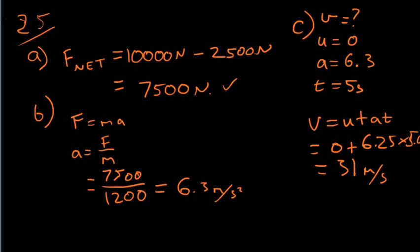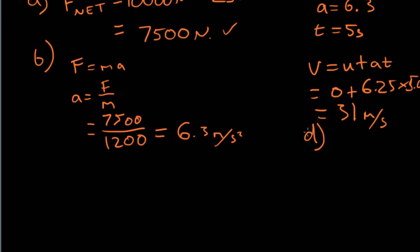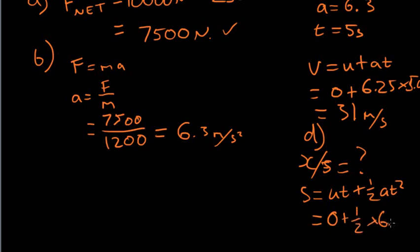Finally, for D, we're looking for displacement, which is x or s. The formula we're going to use is s equals ut plus half at squared. We already know our values from the previous questions, so we can substitute them in: 0 plus 0.5 times 6.25 times 5 squared.